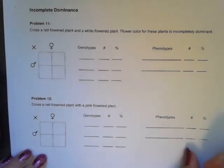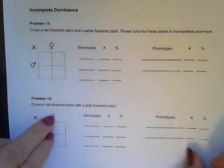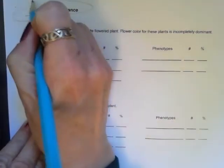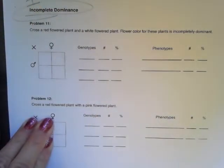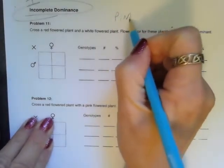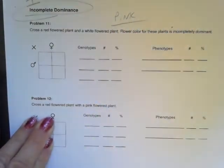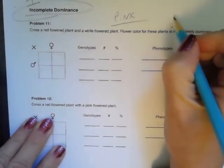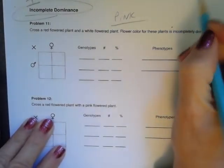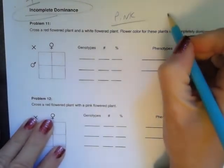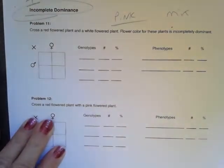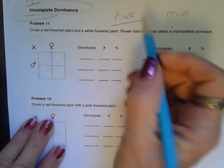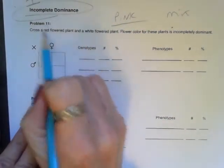This is an example of how to do an incomplete dominance cross. Remember incomplete dominance — I think of these pink flowers as a little reminder that one allele does not dominate over the other one, so you get a mix.